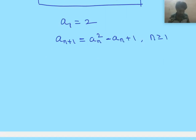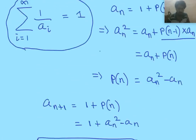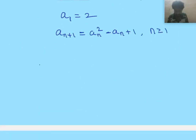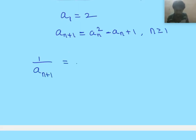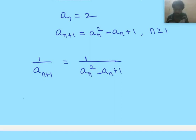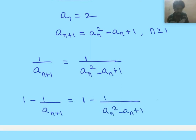Now we are going to make another observation. What we are summing up is the reciprocal of these elements. Let us consider the reciprocal of the (n+1)th element, which is 1 by a_{n+1}. This is 1 by (a_n squared minus a_n plus 1) by the definition of the (n+1)th term. So what is 1 minus 1 by a_{n+1}? This is 1 minus 1 by (a_n squared minus a_n plus 1), which simplifies to (a_n squared minus a_n) divided by (a_n squared minus a_n plus 1).